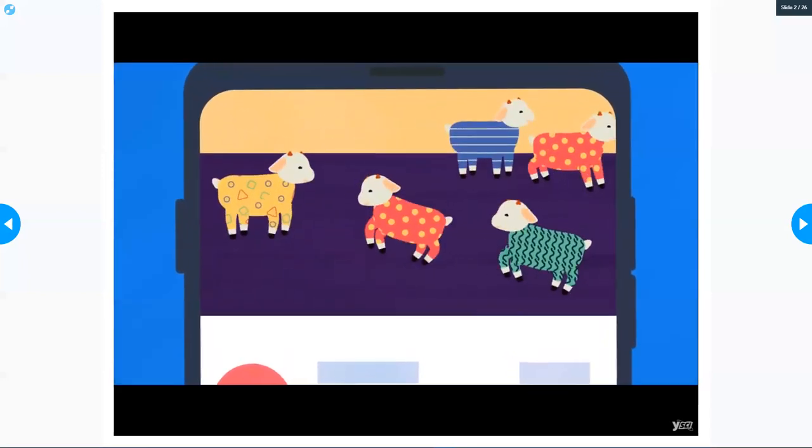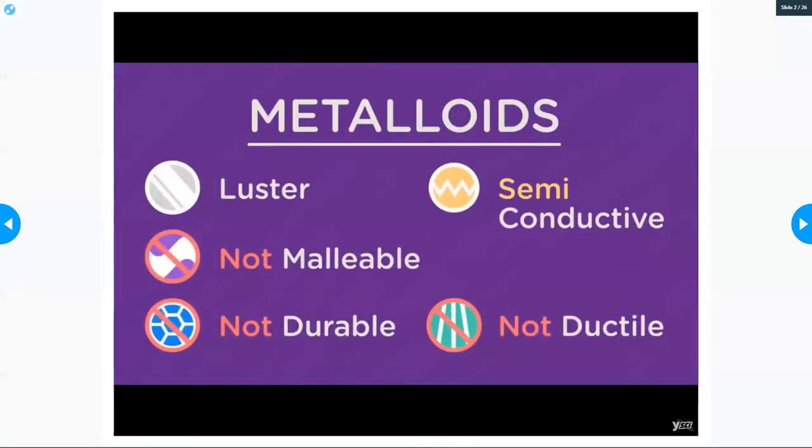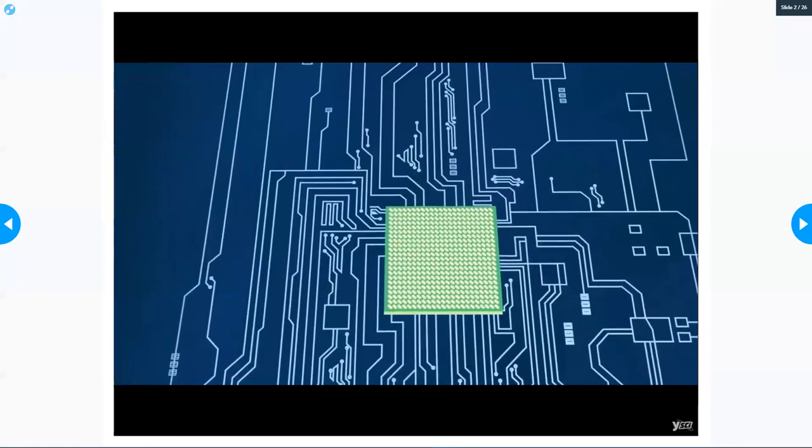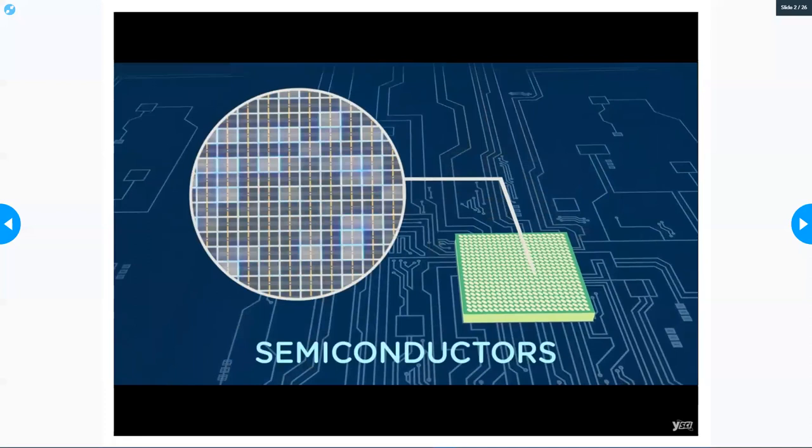Like metals, metalloids have luster, but unlike metals they're not malleable or ductile, so they break apart easily. Metalloids are a crucial component of your processor because they're semiconductors, meaning they conduct electricity but not quite as well as metals.